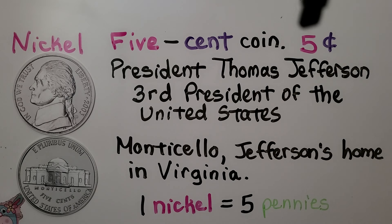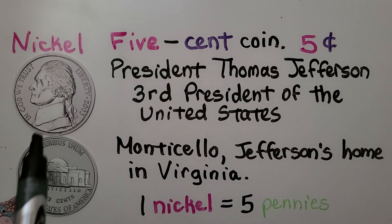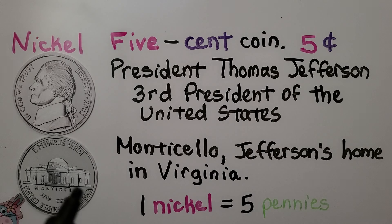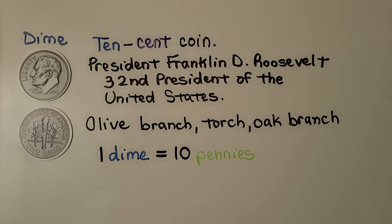This is the nickel. It's a 5 cent coin, and we write it as 5 with the cent symbol. It's got President Thomas Jefferson, the third president of the United States, on the front — see how he's facing to the left? On the back, this building is Monticello; it was Jefferson's home in Virginia. One nickel is equal to 5 pennies.